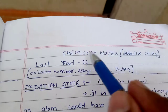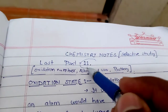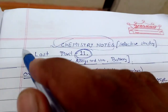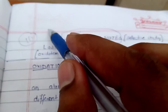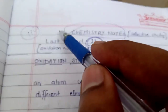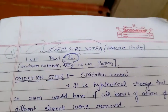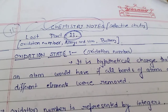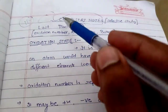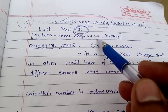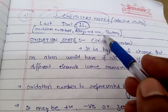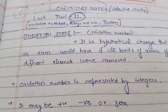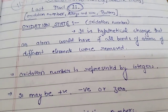Welcome to Toppers Corner Chemistry Notes Selective Study, last part - Part 11. This is the last video of the chemistry series. There are 11 videos in the series which we are making for NDA chemistry. We have covered each and every point which will be asked in your NDA exam. There is nothing outside these notes that is important because we have selective and smart study. The topics we are going to cover are: oxidation number, alloys and their uses, and battery.